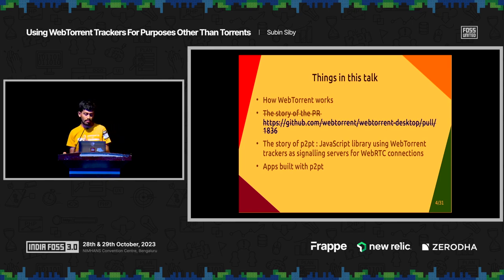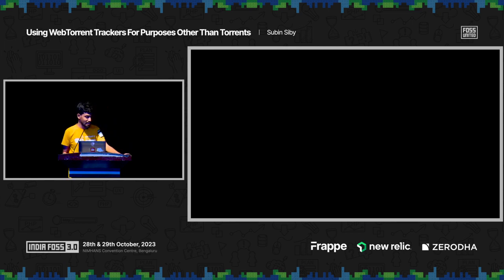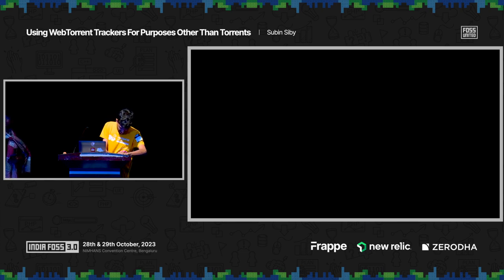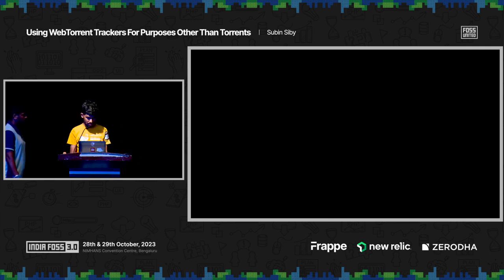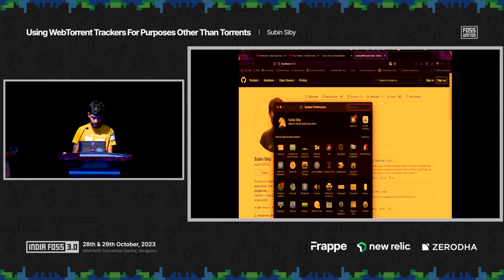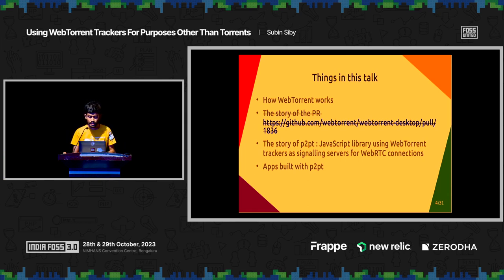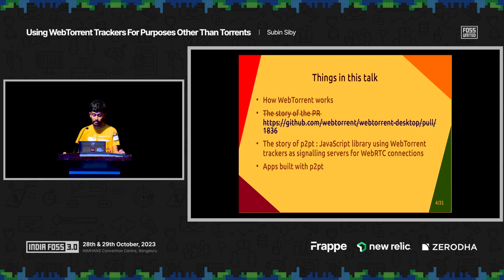So what's going to be in this talk? I will be explaining how WebTorrent works. The original talk also covered a contribution I made to WebTorrent and how to contribute to open source, but I'll be skipping that since I don't have time. I'll be talking about the library P2PT — a JavaScript library using WebTorrent — and I will be showing some apps built with P2PT. Maybe I'll start with the demo so you know how it works.